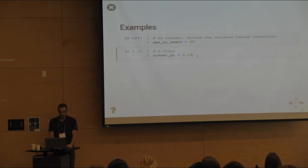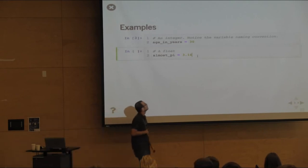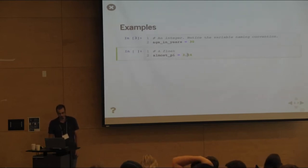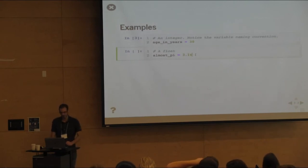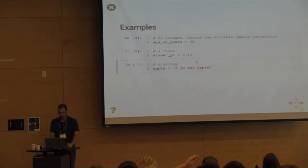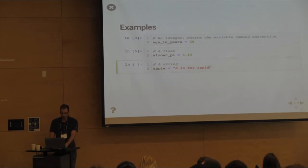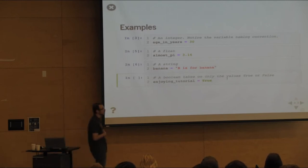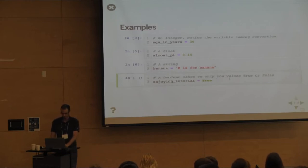If we wanted to initialize a float, we just declare it — you don't have to say 'by the way, this is a float.' You can infer that from the decimal. This cannot be an integer because it has values after the decimal — so this is almost pi. For a string, you just assign the string to the variable. And for a boolean, we assign the value True to our enjoying_tutorial variable.